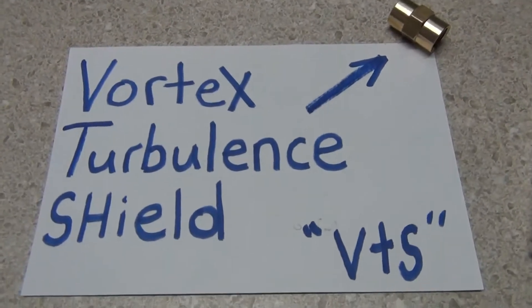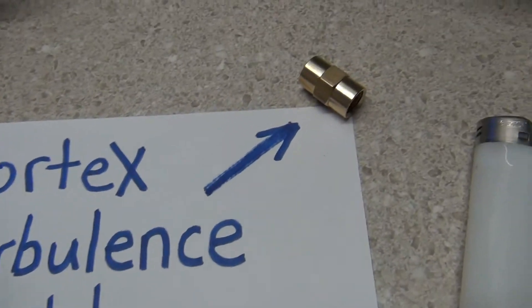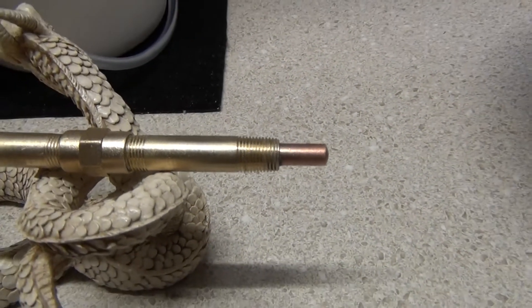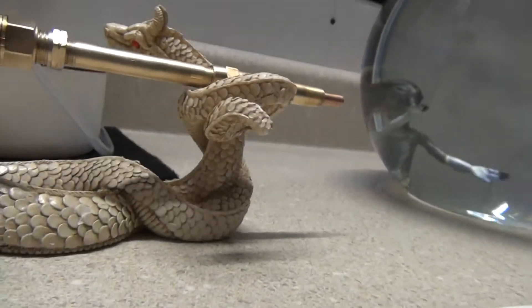And you've got to have this right here, the Vortex Turbulence Shield, or the VTS for short. And all it is, is a coupling that I have that goes on the end here. Okay, I'm going to set this down, I'm going to go ahead and put that coupling on there.